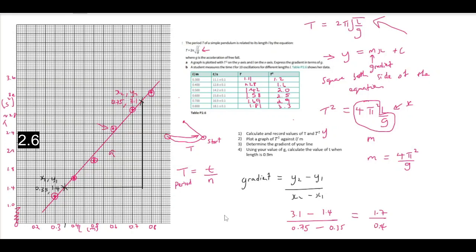So, pretty much, our M value, which is the gradient, is equal to 4.25. All right.